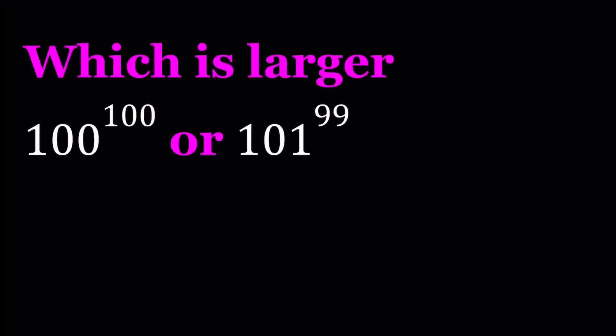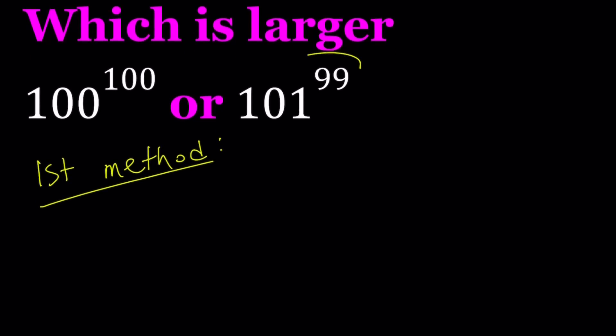I'll be presenting two methods. We're going to talk about a couple interesting facts about these kinds of numbers. Let's start the first method. For my first method I'm going to look at the ratio of these two numbers, 101 to the power 99 divided by 100 to the power 100. We're going to be looking at this ratio.